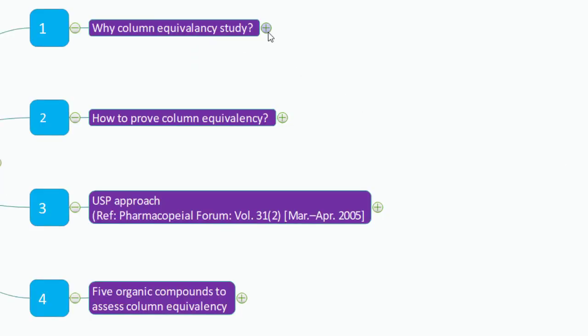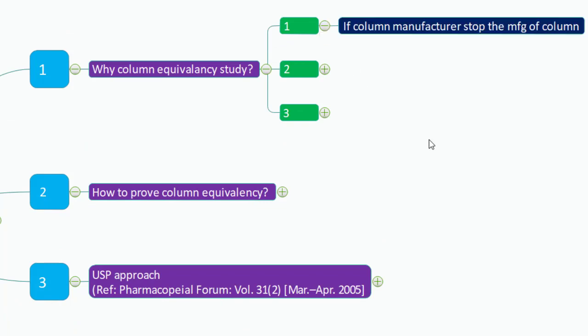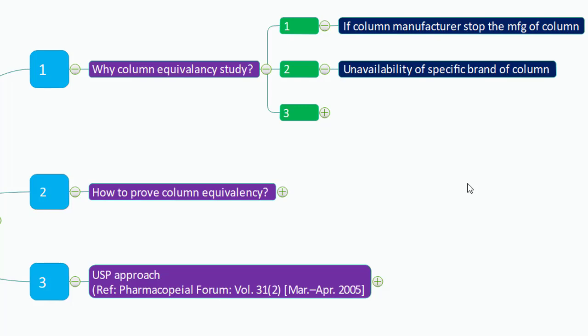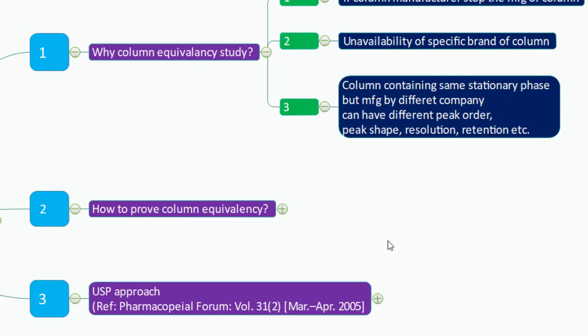Why is a column equivalency study needed? First, if a column manufacturer stops manufacturing and you don't have an alternative column, you cannot conduct the analysis. Second, unavailability of a specified brand — for example, a column available in the US or Europe may not be available in India. Third, columns containing the same stationary phase but made by different companies can have different peak order, peak shape, resolution, and retention.